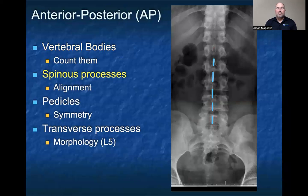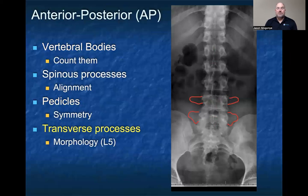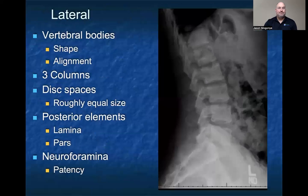When you look at the spinous processes, you want to make sure that they're aligned midline, that the image is not rotated or that there's not a rotational component to the patient while they're standing. You want to look at the pedicles and make sure that they're symmetrical in size and shape and also symmetrical in height. The transverse processes you're going to look at as well — there could be some morphological changes in some congenital conditions that we could talk about at a later date.